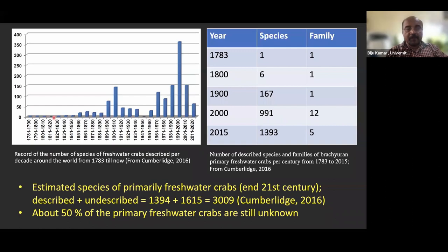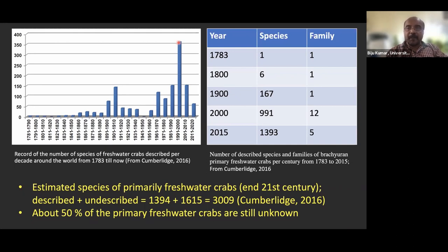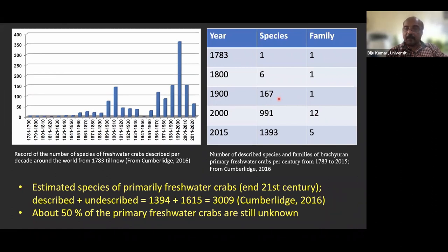Looking at the speed of taxonomy research globally: in the 17th and 18th centuries there was little interest. Something happened towards the beginning of the 20th century, but almost all taxa were discovered after the 1950s. Between 1991 and 2000 more than 340–350 species were discovered. In 1900 there were only 167 species globally; by 2000, the number reached 991, and the number of families grew from 1 to 12.